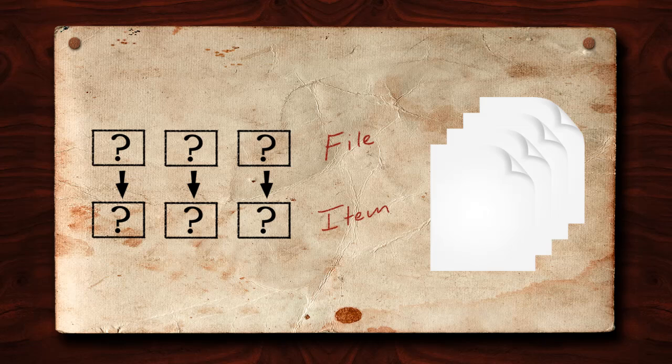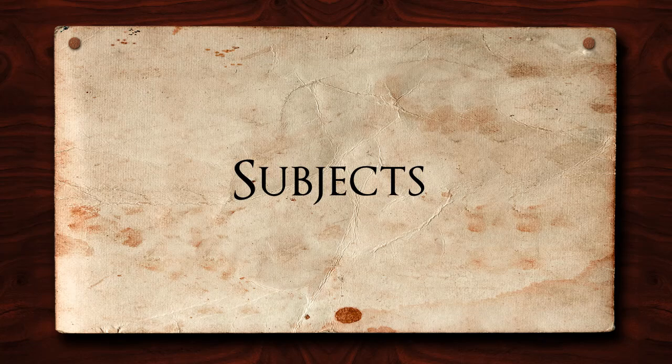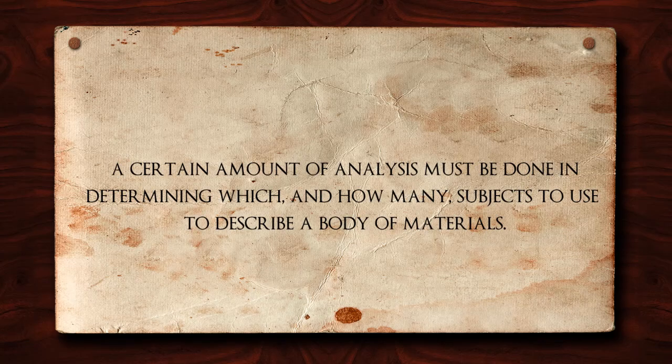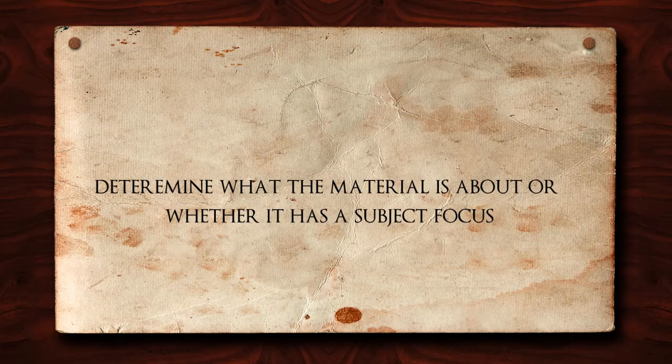We will now review each of the four types of access points, along with some recommendations for selecting the correct terms. The first type of access point, subjects, is perhaps the most complex. A certain amount of analysis must be done in determining which and how many subjects to use to describe a body of materials. The main goal of subject analysis is to determine what the material is about or whether it has a subject focus.